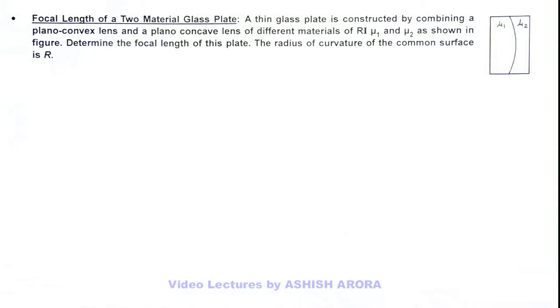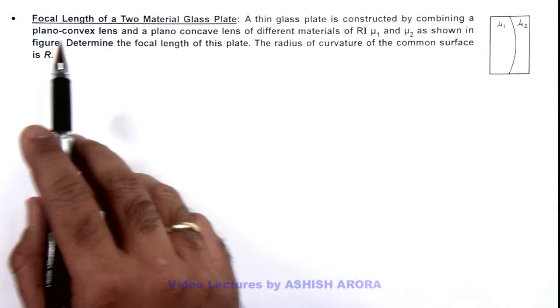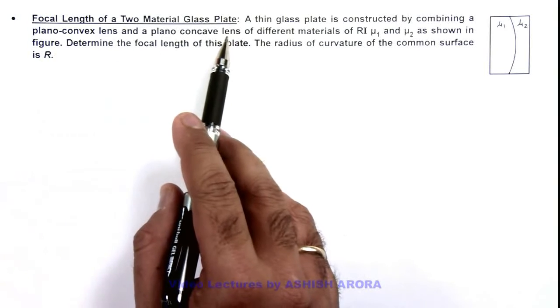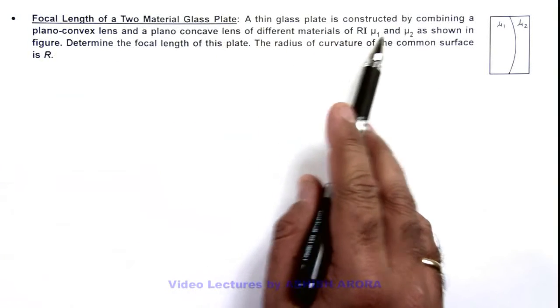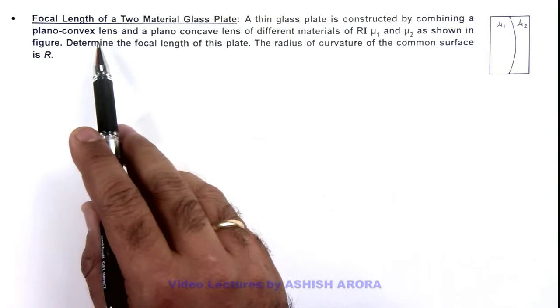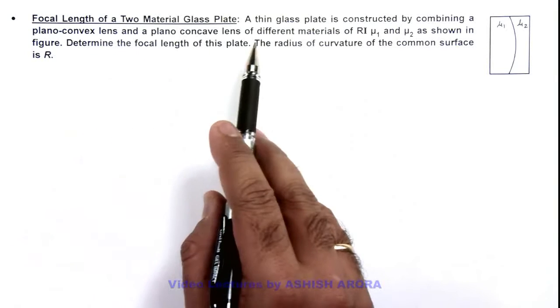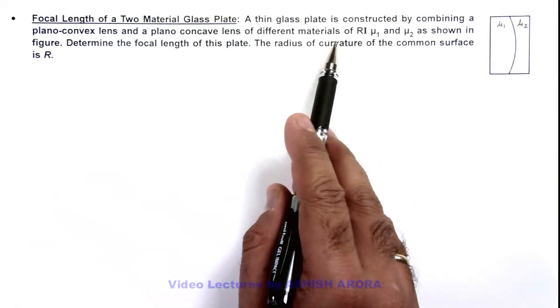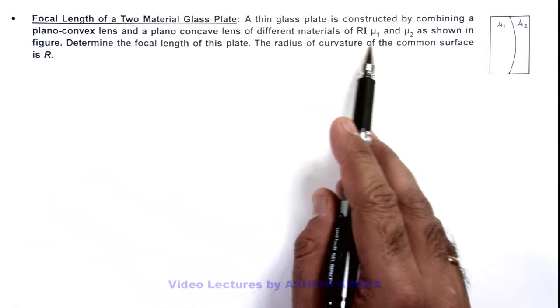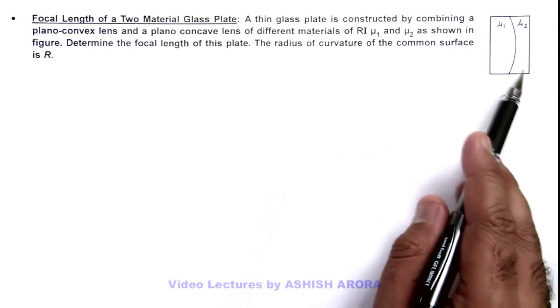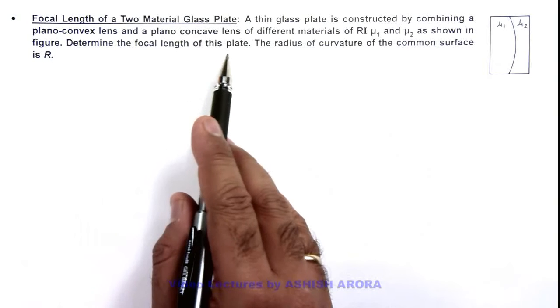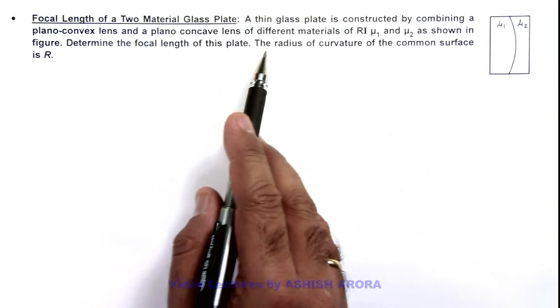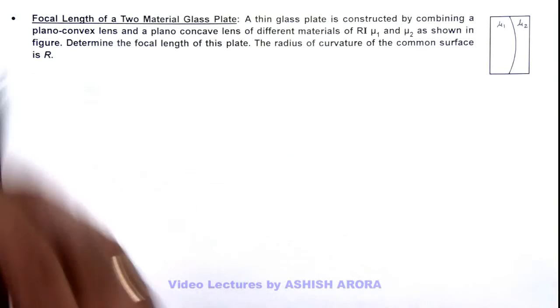In this illustration, we'll study the focal length of a two-material glass plate. Here we can see a thin glass plate is constructed by combining a plano-convex lens and a plano-concave lens of different materials, of refractive indices mu 1 and mu 2 as shown in the figure. We are required to find the focal length of this plate, and it is given that the radius of curvature of the common surface is r.